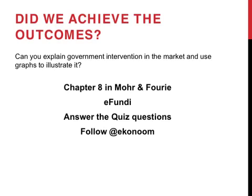So did we achieve the outcomes of this section? Can you explain government intervention in the market and use graphs to illustrate it? For more information have a look at Chapter 8 in the textbook. There are additional resources available and you can answer the quiz questions. Follow Econoom on Twitter.